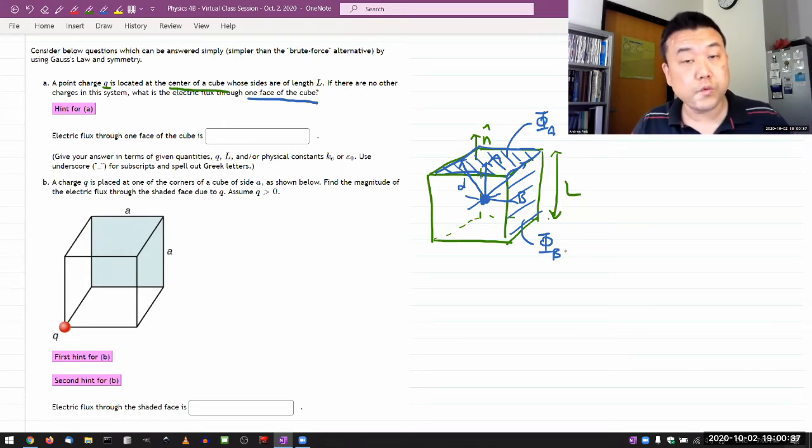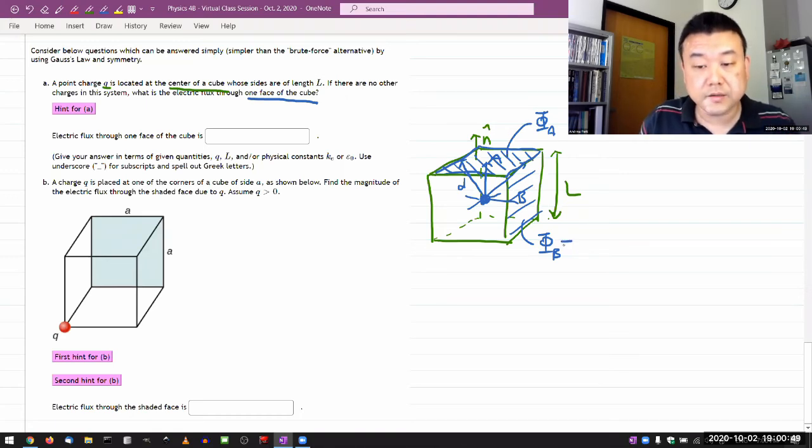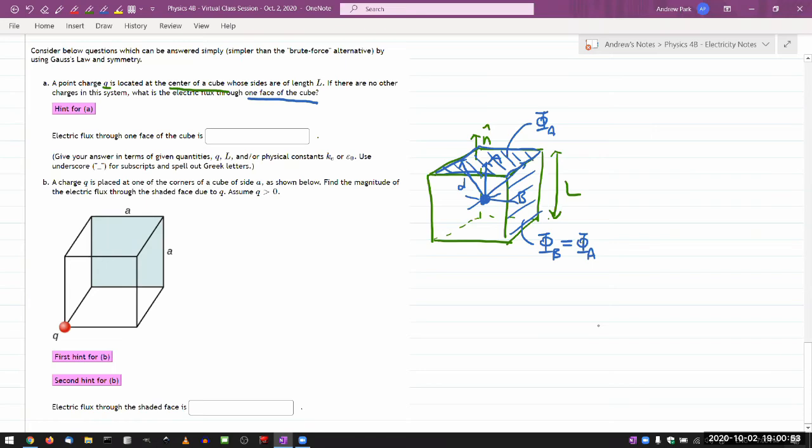So, the only way the whole thing is self-consistent is if the flux through B is equal to flux through area A. You can make this exact same argument with all six surfaces of the cube, which means I can now make this argument that the total electric flux through the entire cube is going to be six times flux through one of the surfaces. Because the symmetry dictates that flux through one surface is the same as flux through any of the other five surfaces.